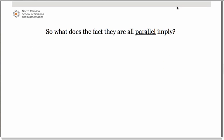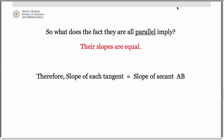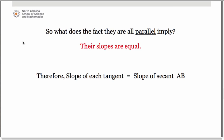So what does the fact that they are all parallel imply? It implies of course that their slopes are equal. Therefore the slope of each tangent will equal the slope of the secant line from a to b. Let's write that in terms of an equation.